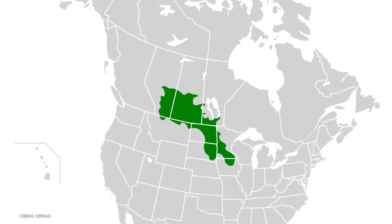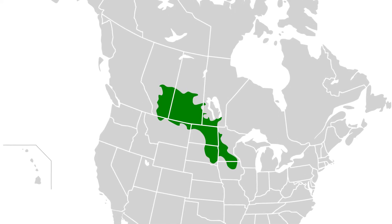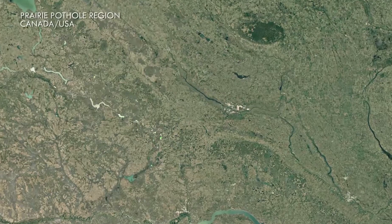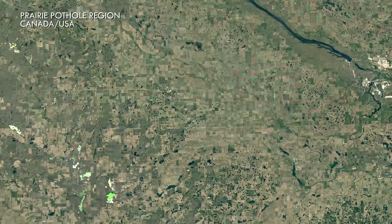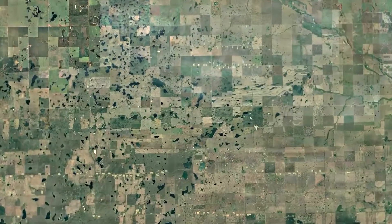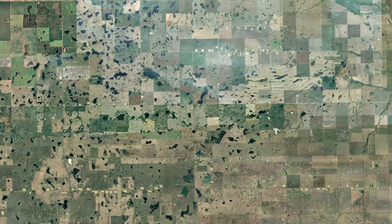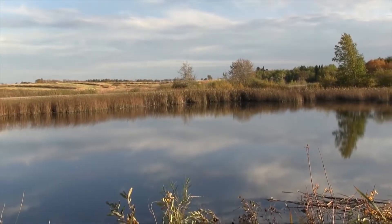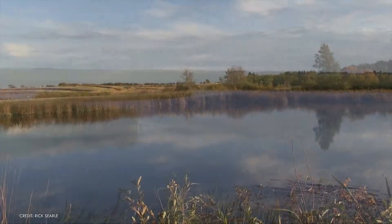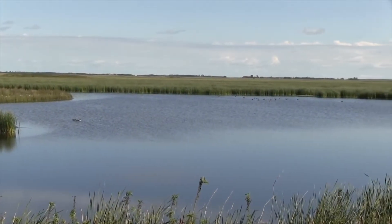One last region worth mentioning is the prairie pothole region that runs from Alberta down to Iowa in North America. This region of the North American prairie is covered in thousands of pothole depressions formed by uneven deposition of glacial till during the last ice age. These potholes fill with water in the spring, and many evaporate by summer, but some are permanent. As they don't quite fit the description of any of the above types, this final point goes to demonstrate that wetland habitats are as complex and varied as the earth is in terms of topography, hydrology and biology.